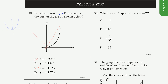What about the 1.75? That's just a scaling factor. A larger number makes it curve up faster; a smaller number makes it curve up slower. But the general idea is they all have the general shape of a parabola. So this one looks pretty good.